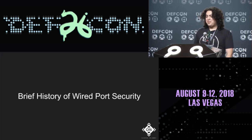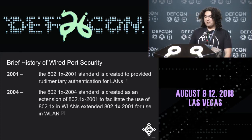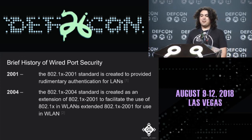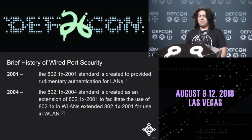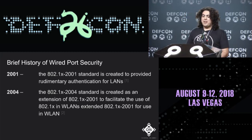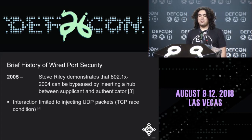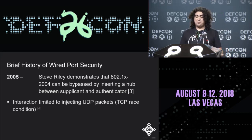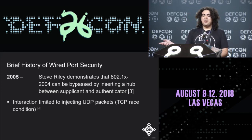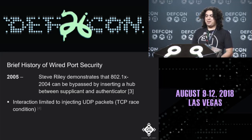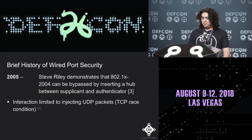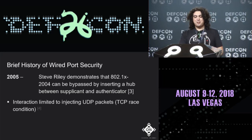A brief history of wired port security: in 2001, IEEE released 802.1X-2001 to provide rudimentary authentication for LANs. It was revised in 2004 with 802.1X-2004 to support wireless environments. A year later, researcher Steve Riley discovered you could bypass 802.1X by inserting a hub between the supplicant and authenticator — passively sniffing traffic and injecting UDP packets, though TCP injection caused race conditions.